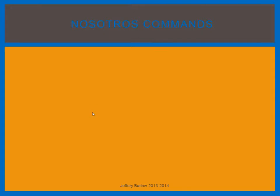Bienvenidos a esta presentación de los mandatos nosotros. This presentation is going to talk about how to form nosotros commands and how to use them with pronouns. So first, let's talk about what a nosotros command is — how do you tell yourself and your friends to do something? In English this is the equivalent of saying to a group of people: let's go, let's talk, let's dance. It is a command telling the group to do something, and since you are part of the group, it is the first person plural nosotros command.